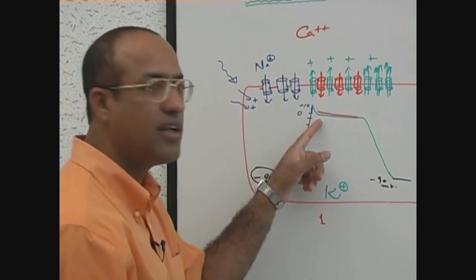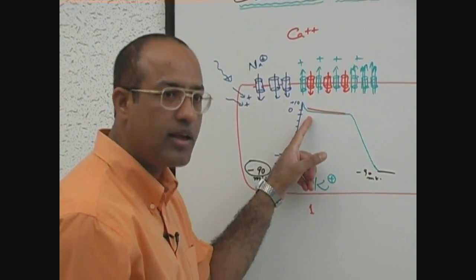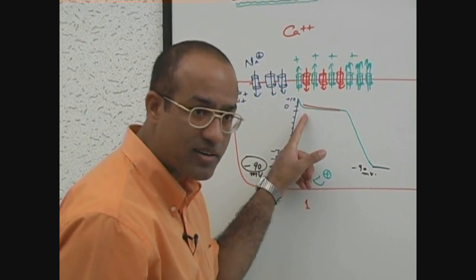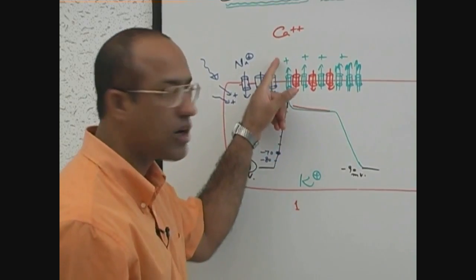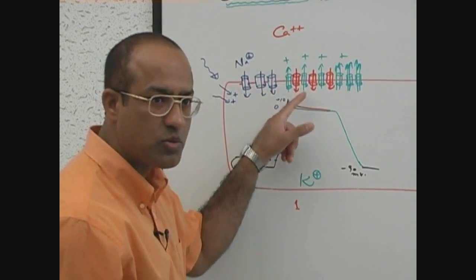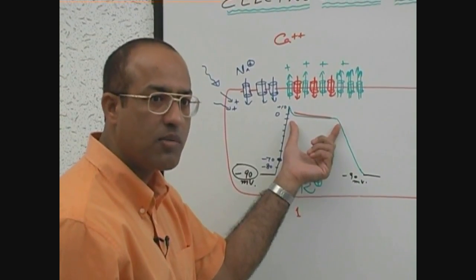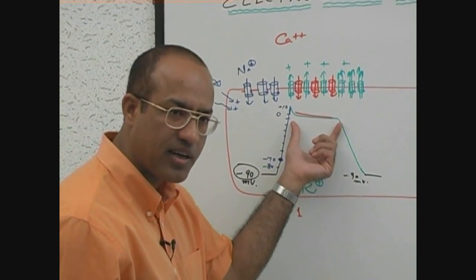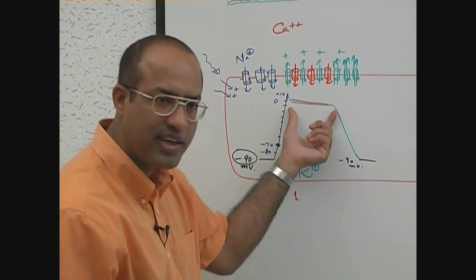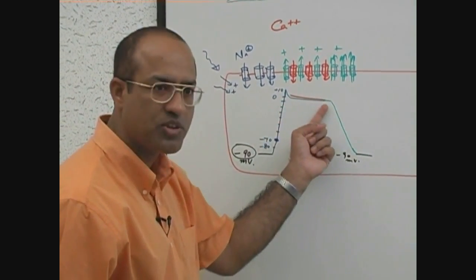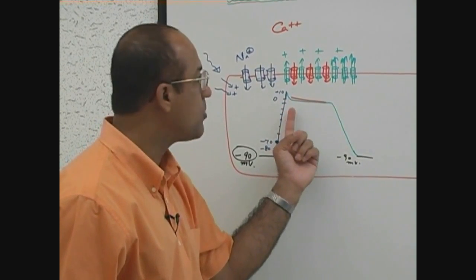After depolarization, in ventricular and atrial cells, the repolarization process starts. In the repolarization process, initially potassium goes out, but very soon calcium starts coming in. For a brief time, potassium is going out but at the same time calcium is coming in, so cations are lost as well as gained.